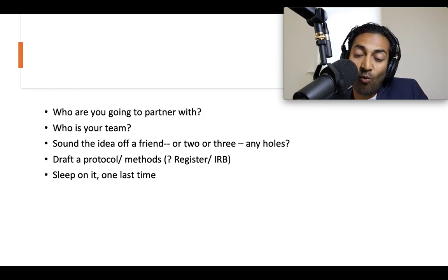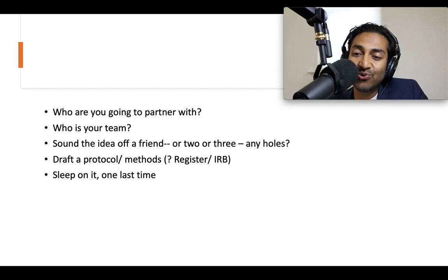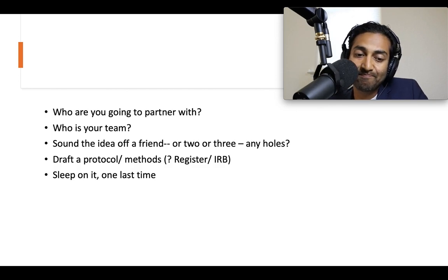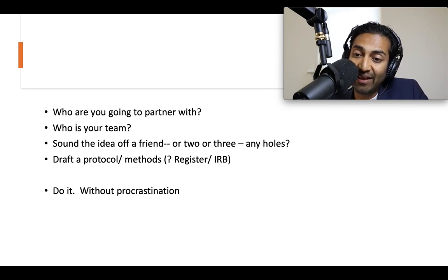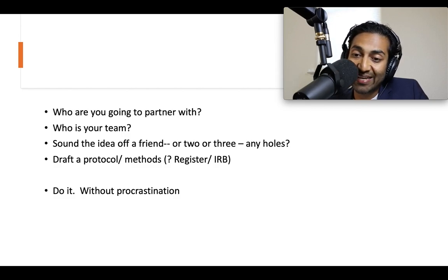Once you assemble your team, draft a protocol, draft some methods. I put a question mark next to registering that — for certain types of questions, you really ought to register it. IRB approval — I'll leave that to the particular situation you're in. It's important that you get down on paper what it is you want to do and how you're going to do it. And then, even before you go forward, sleep on it one last time. Then you've decided, you've committed, this is worth doing, you've got the team, you've whittled it down to one key idea — do it. Don't procrastinate. Just get it done while you have the energy and the enthusiasm and while people are really keen on seeing the results.